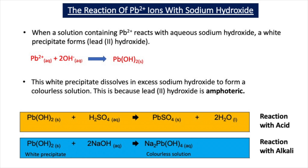In part B, we added excess aqueous sodium hydroxide to the lead-2 hydroxide white precipitate and found that it dissolved to form a colourless solution. The fact that this white precipitate dissolves tells us that lead-2 hydroxide is amphoteric — a substance that will react with both acids and bases.